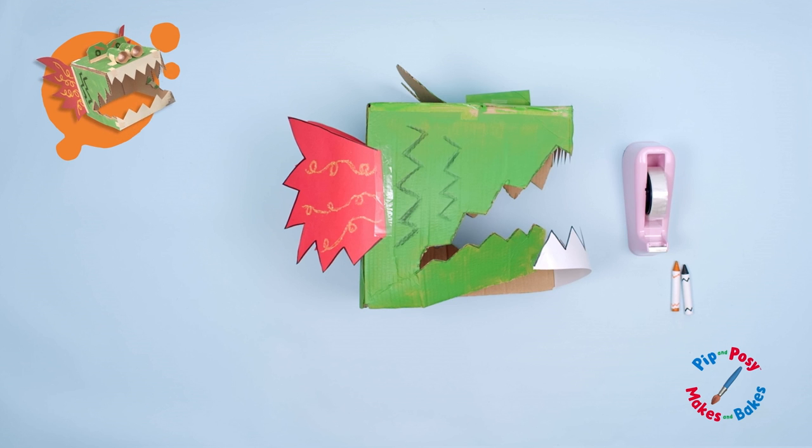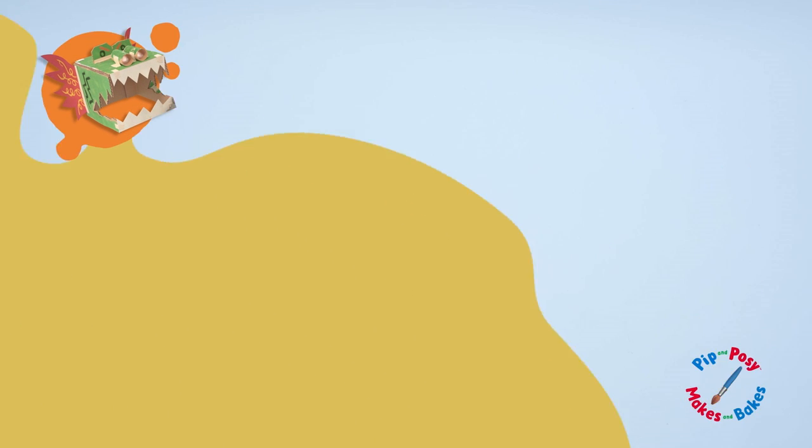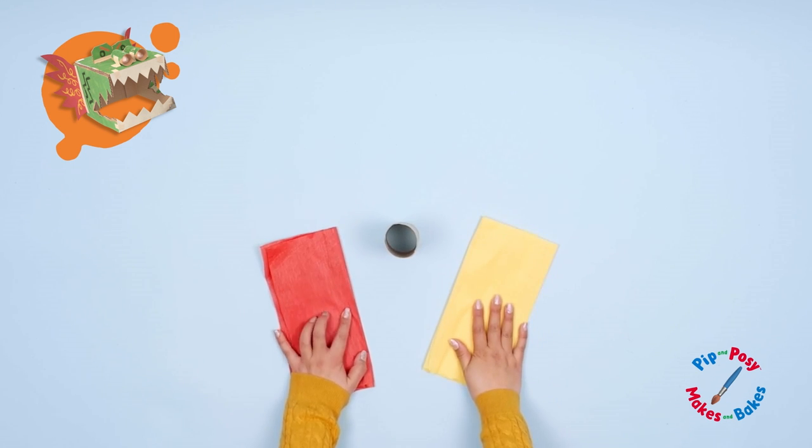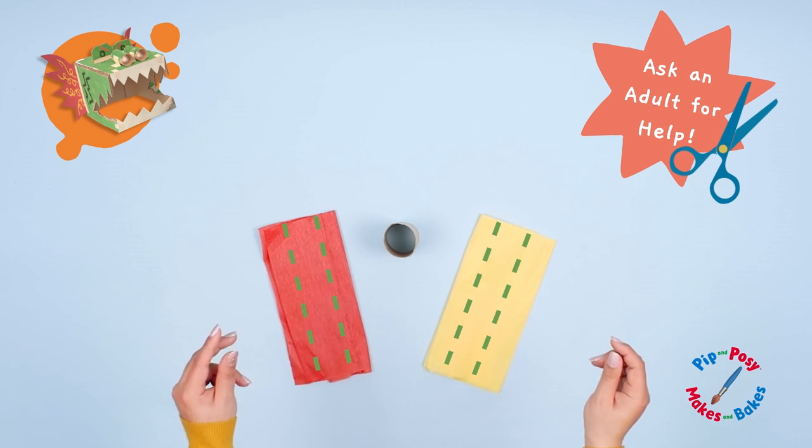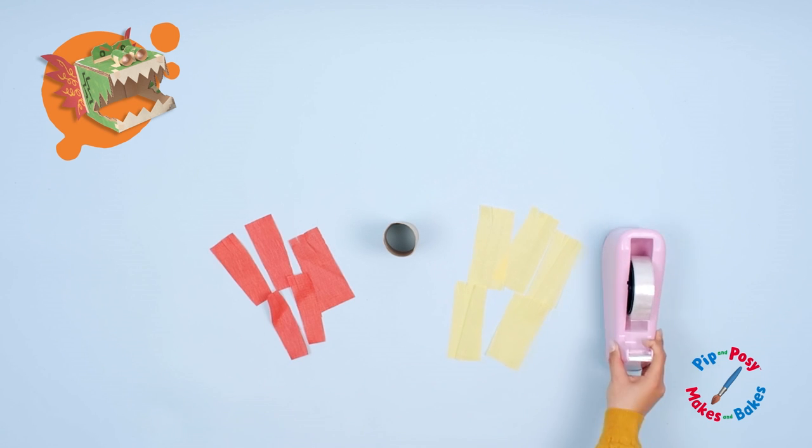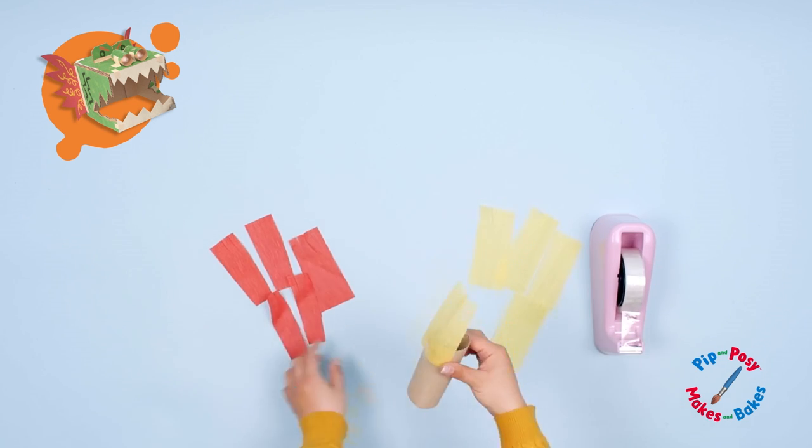We're almost done! The dragon just needs some fiery breath. Take one more loo roll and your red and orange tissue paper. Cut your tissue paper into smaller strips. Stick the tissue paper around the end of the loo roll.